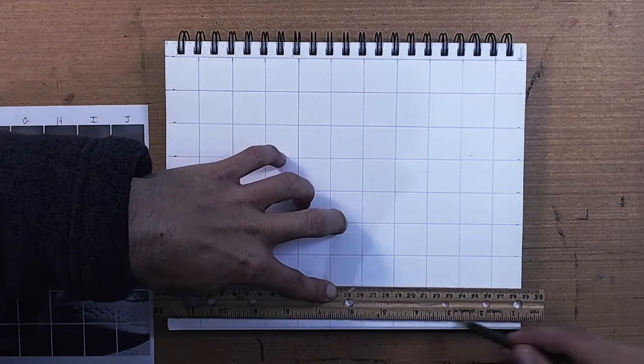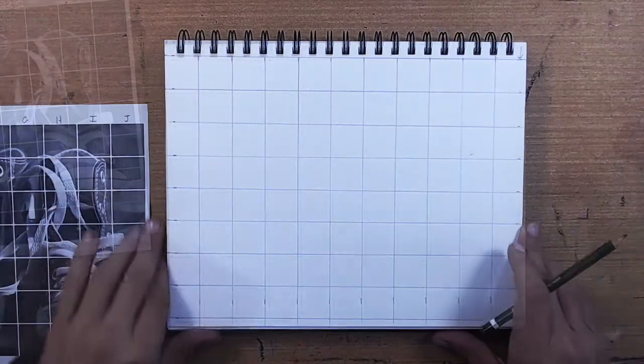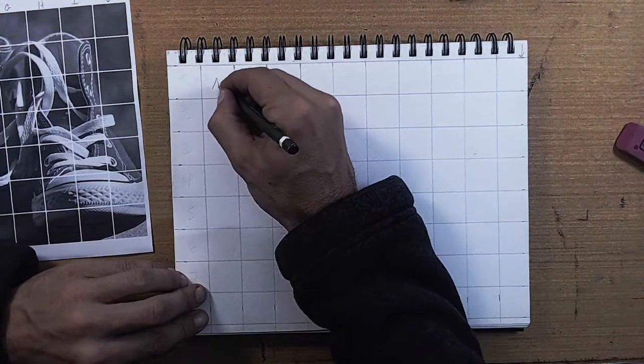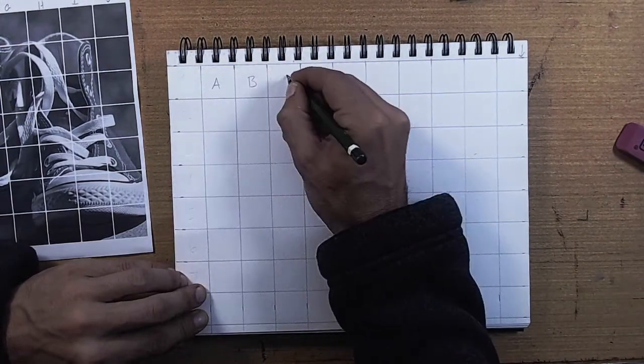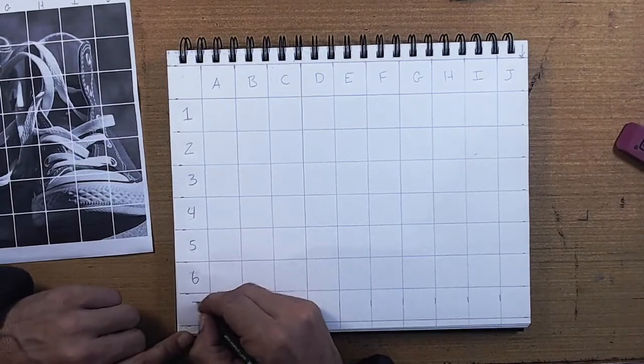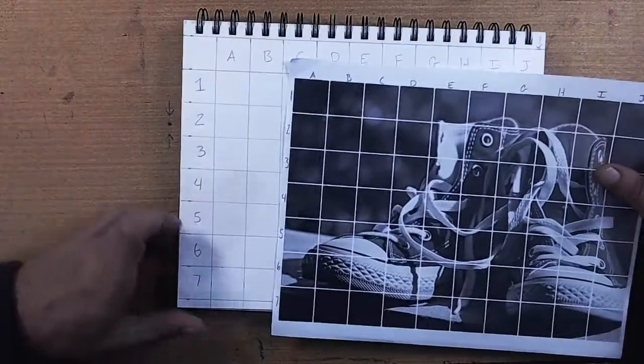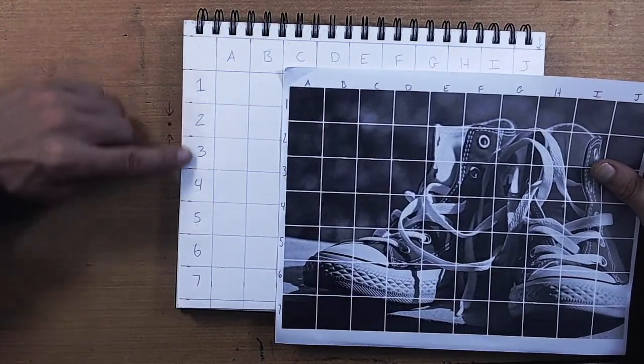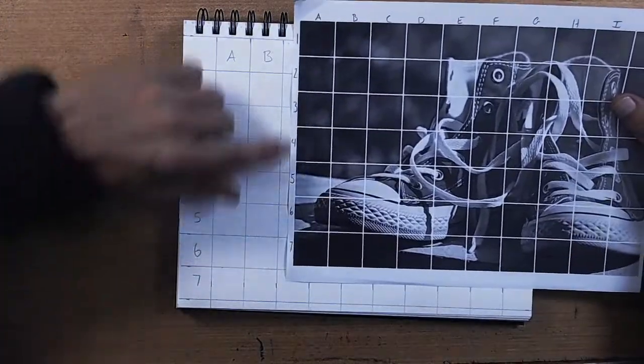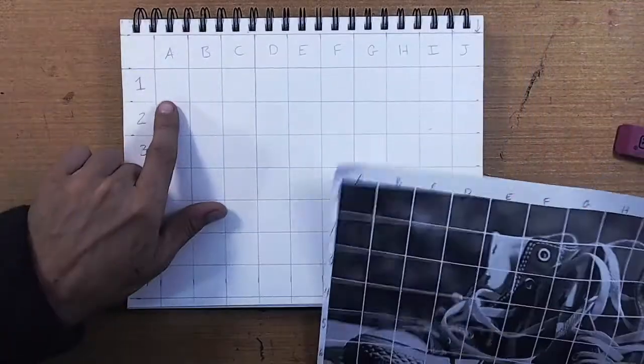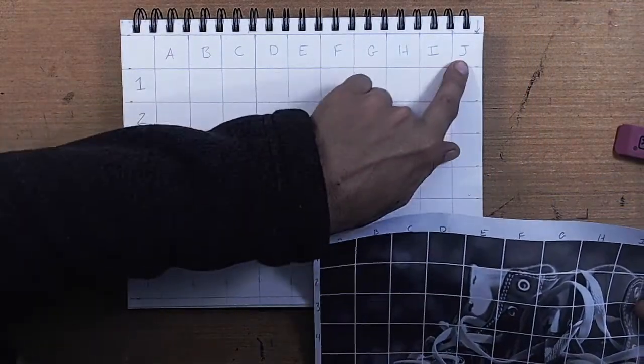Once your grid is done, you want to make sure that you have the same number of squares on your drawing paper as you do your photograph. You can draw a grid on the photograph as well. I put a grid on this photograph digitally. Notice where my numbers and letters are. This photograph has ten columns and seven rows.